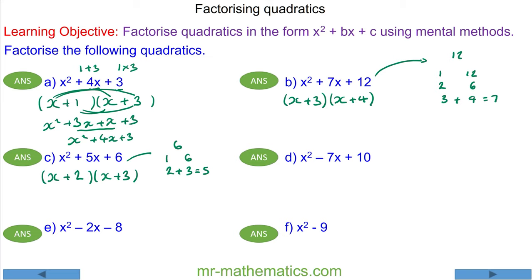For question D, we need two numbers that multiply to make positive 10, which are 1 and 10, 2 and 5, but they must add to make negative 7, and none of these factors do. But we do know that two negatives multiply to make a positive. So we could have negative 2 add negative 5, and that will now make negative 7. So in brackets we have x minus 2 and x minus 5.